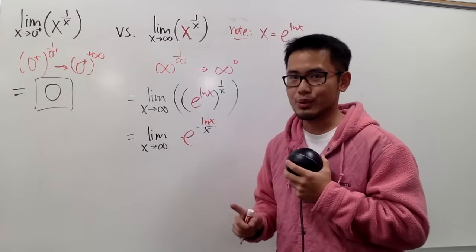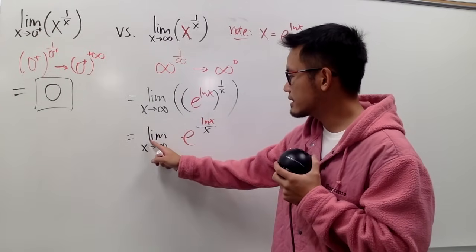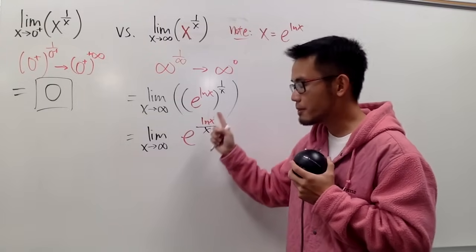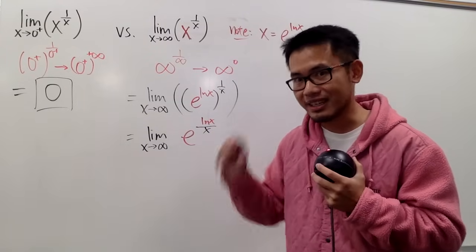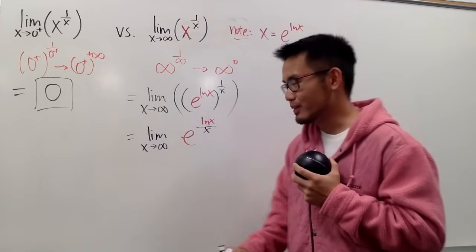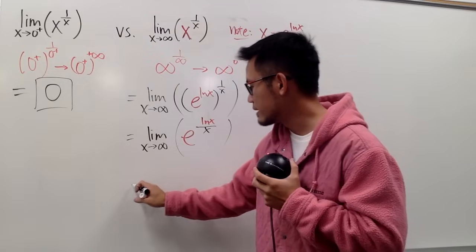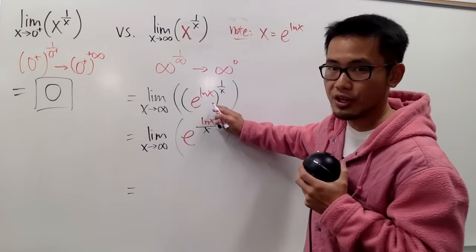And now, what can we do? As x goes to infinity, e to this right here, this is the function, because e to the something is continuous, we can do the following, right? So, it's like this, right? But, I will write it down as the following. We can just take the limit of this right here.